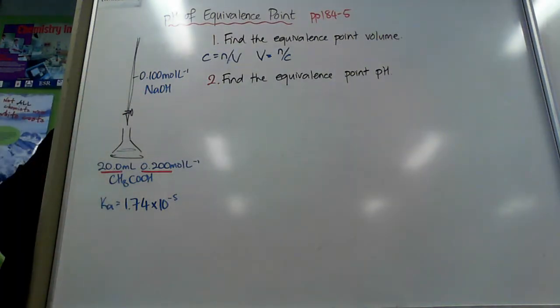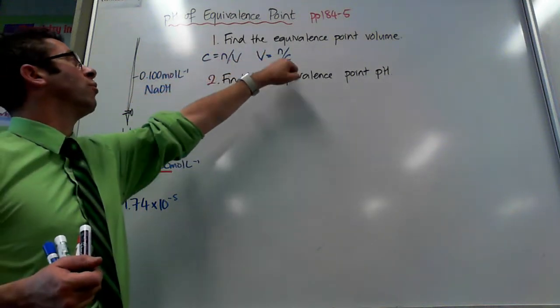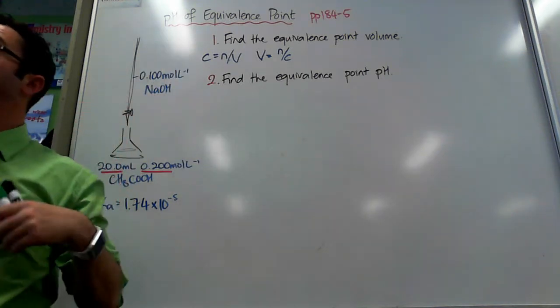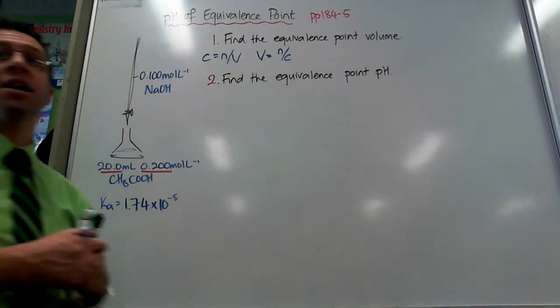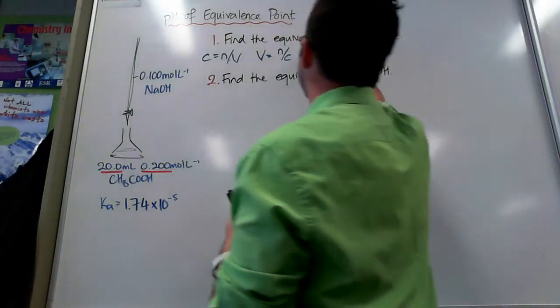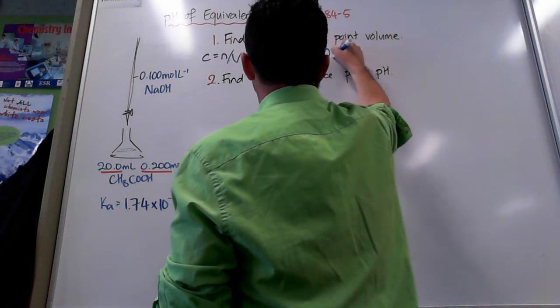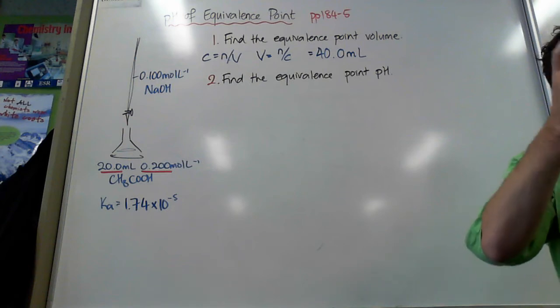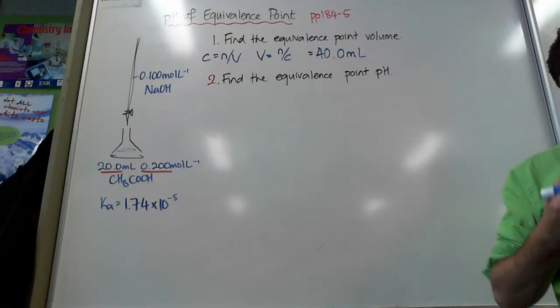0.04 over 0.1 will give me my 40 mils. So my volume here is going to be 40 mils. So I find that this will be 40 mils. I now have a point on my graph. 40 mils is my equivalence volume.